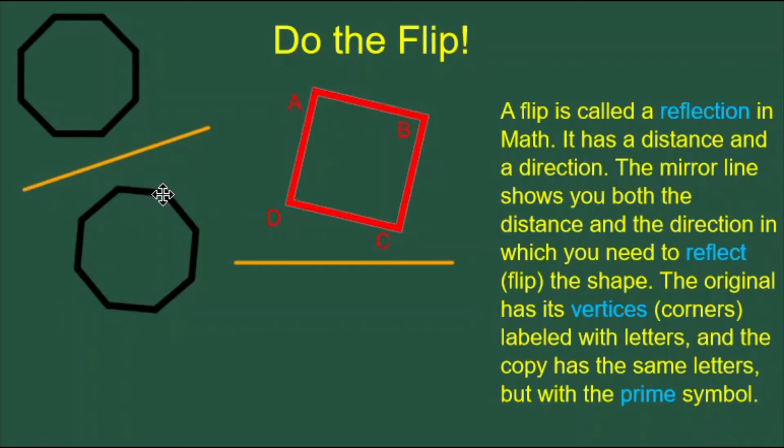But how do we draw something like this? Let's look at our second example. We have a red square, and we have named the corners of the square, its vertices, A, B, C, and D. We also have an orange mirror line.